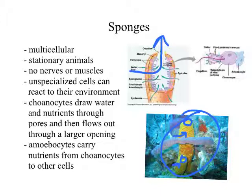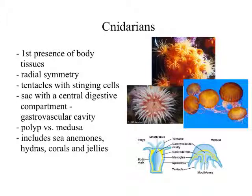Next up on our evolutionary branch of animals are the cnidarians, and these are the first animals where we actually have body tissue — not just a random set of cells, but actual tissues working together to do specific tasks. In cnidarians we have radial symmetry, meaning that if you cut the organism in half, you'll have mirror images no matter which way you cut it. Cnidarians are going to have tentacles with little stinging cells to help capture their prey.